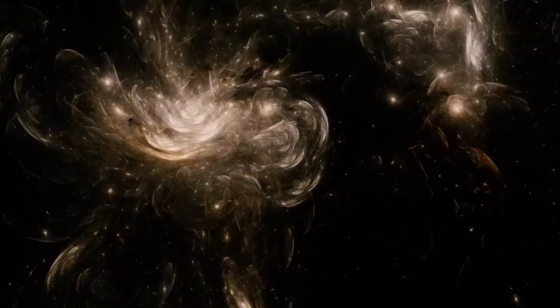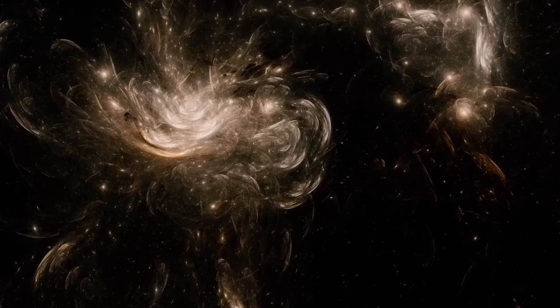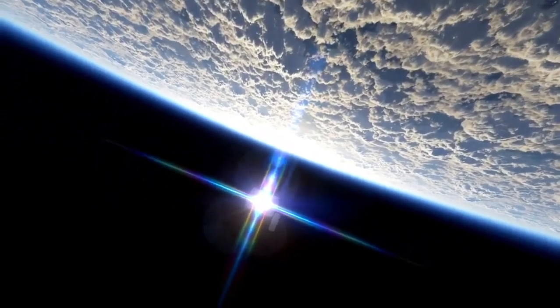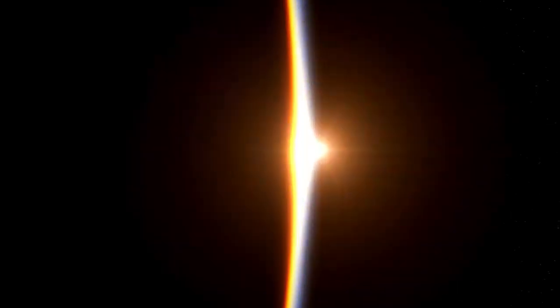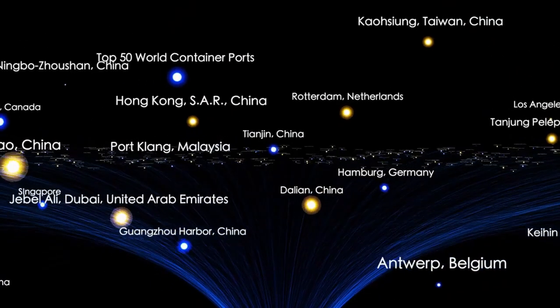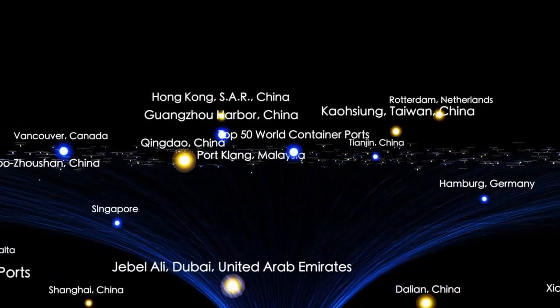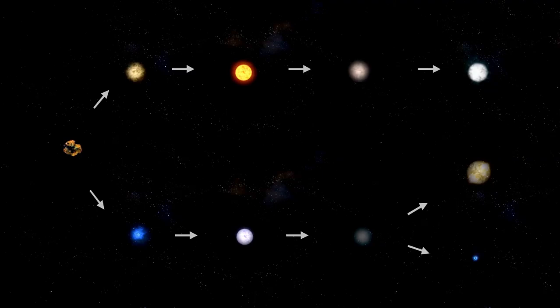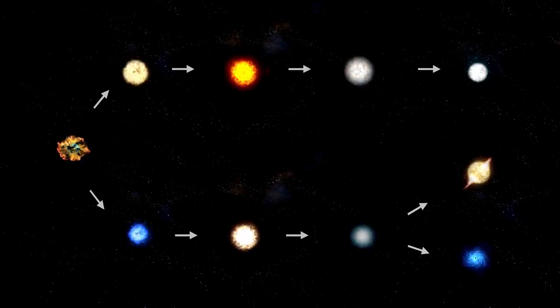Now let us try to wrap our heads around the immense size of the entire universe. Scientists believe the universe stretches about 93 billion light-years across. But what exactly is a light-year? It is the distance light can travel in one year, equivalent to a whopping 63,000 astronomical units. When we consider that each light-year measures an incredible 9 trillion kilometers or 6 trillion miles, we start to grasp just how vast the universe truly is.